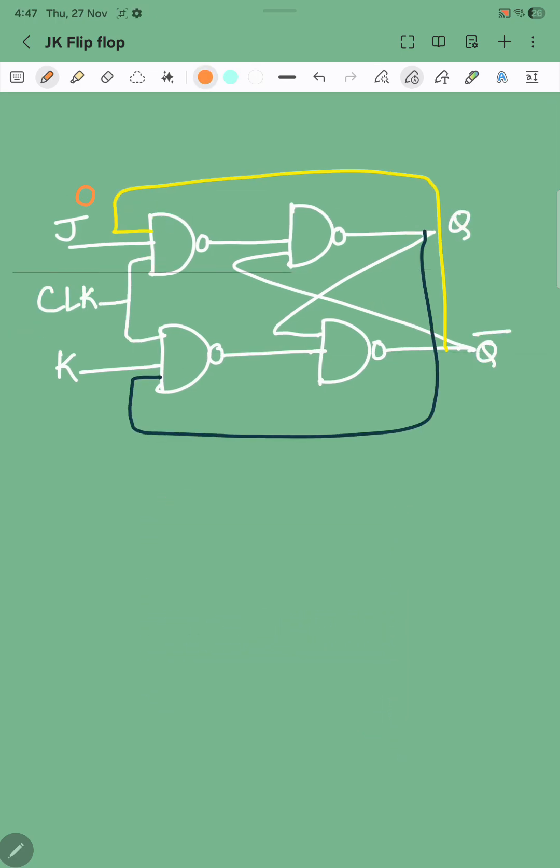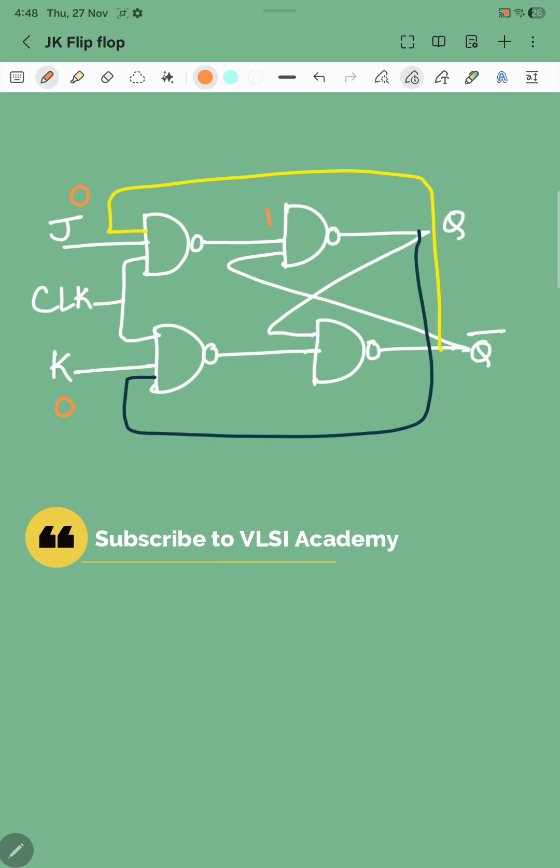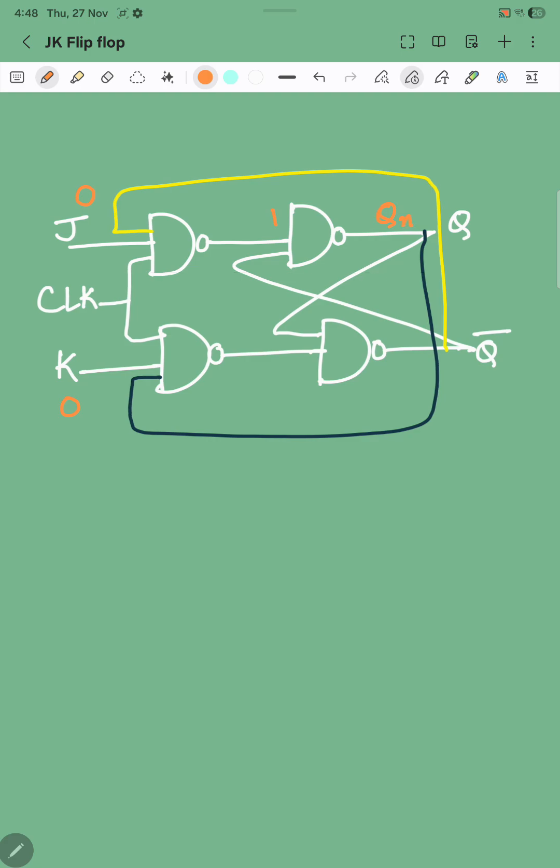Let us assume you give J as 0 and K also as 0. At that time when the clock is high, the intermediate stage here will always be 1 because of the NAND gate, and then this one with this Q bar will always be Q. That will become QN, that means previous stage. The truth table will be like this: JK and QN plus 1, that is our current stage. So if your J is 0 and K is 0, then output will be QN.